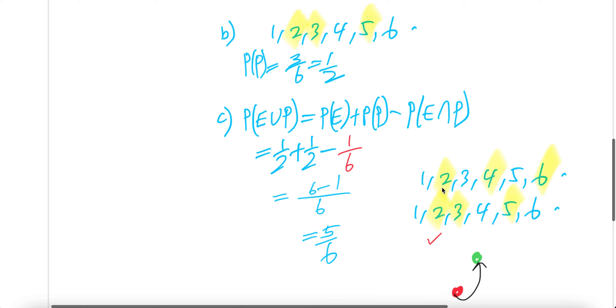Now even is two, four, six. Prime is two, three, five. So the common intersection will be two only.